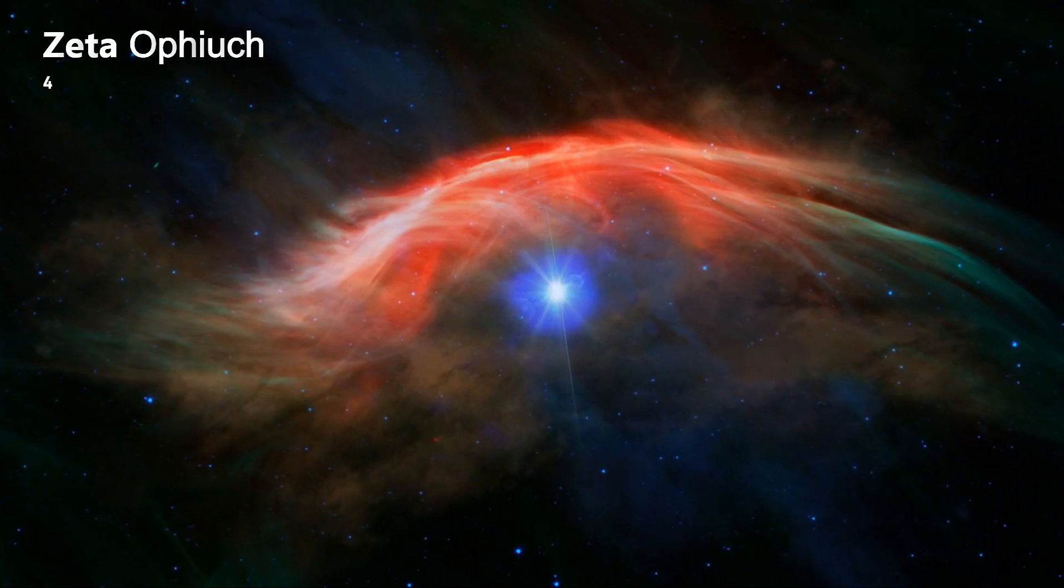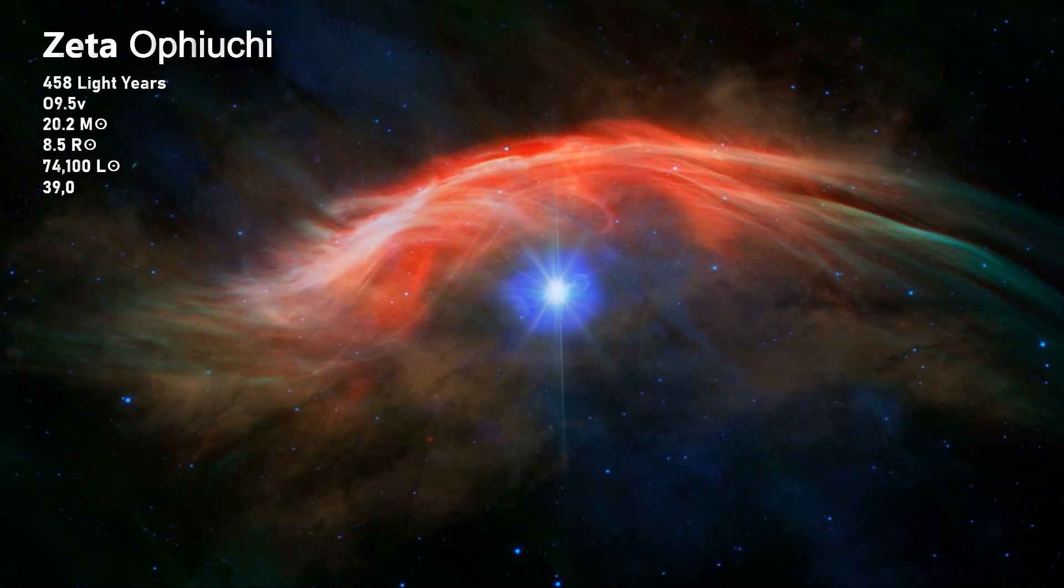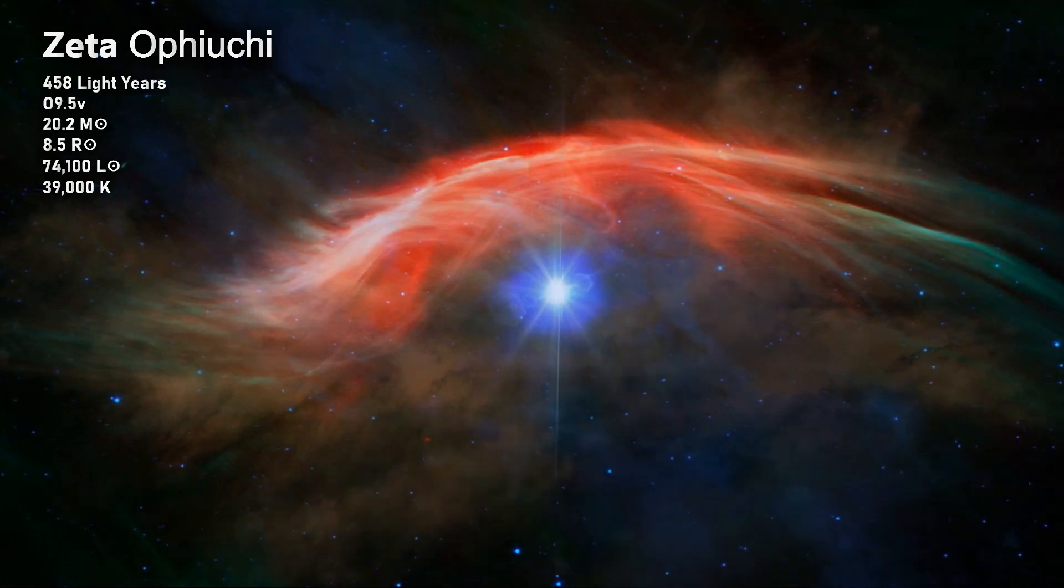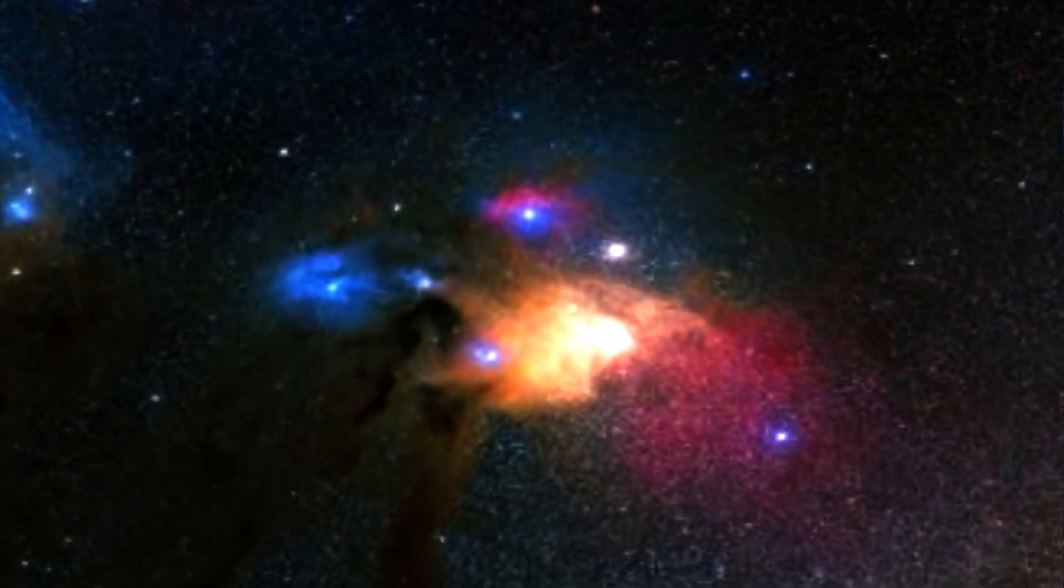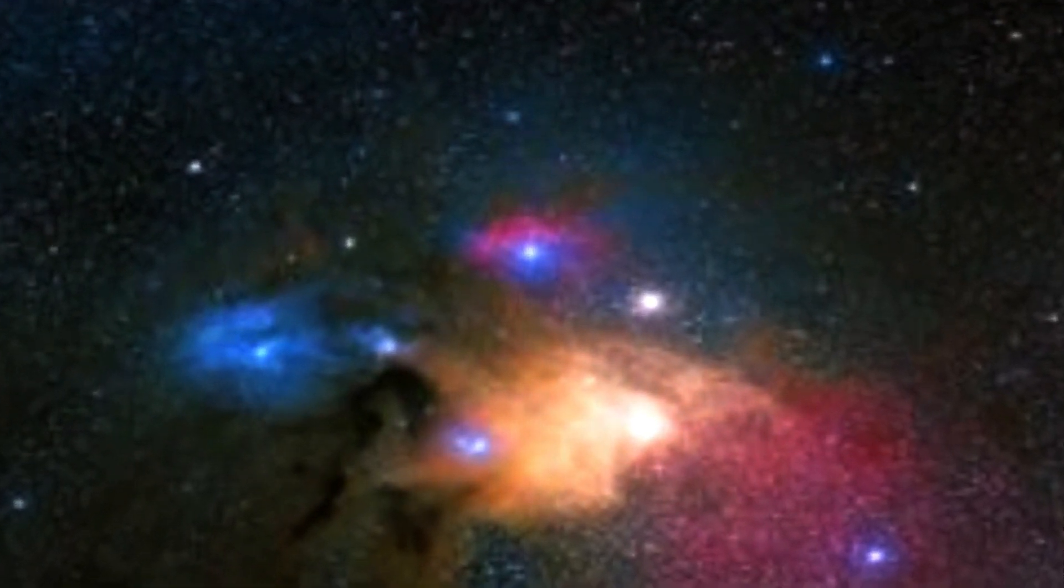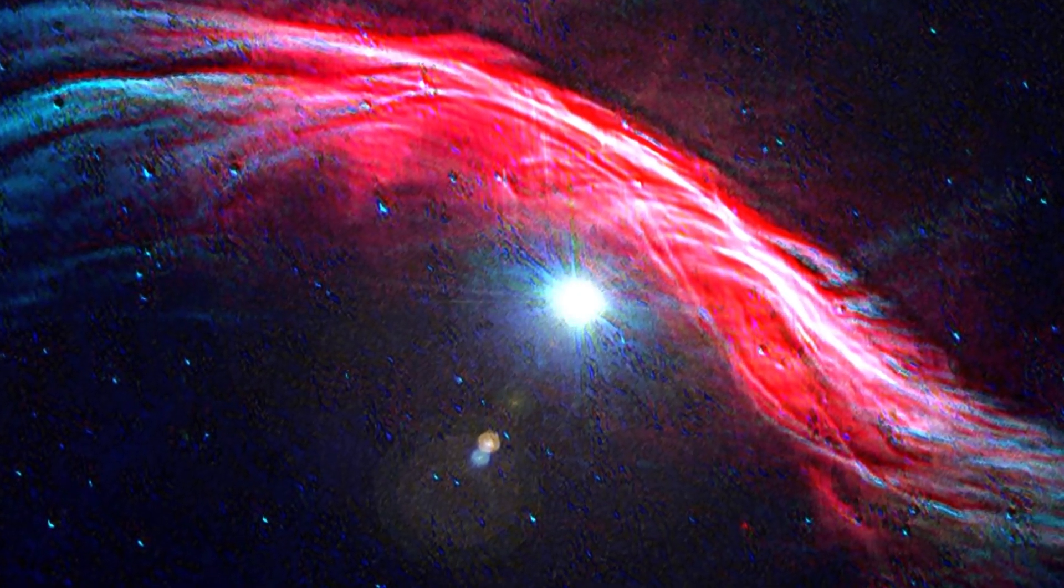Zeta Ophiuchi, also known as Zeta Off, is a solitary star residing within the constellation of Ophiuchus. With an apparent magnitude of plus 2.6, it claims the unremarkable title of third brightest star within the already not particularly notable constellation. The star lies some 458 light years from Earth.